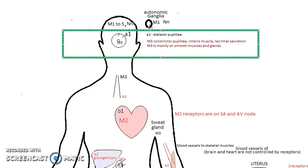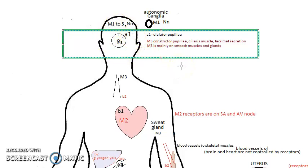If you are sitting relaxed with a constricted pupil — miosis — that is an M3 receptor. If you are running with the dog chasing you and the pupil is dilated — mydriasis — that is sympathetic, so it is alpha-1. Inside: M3. Outside running: alpha-1. Clear?